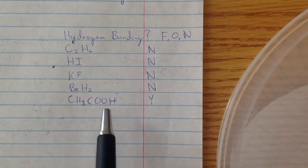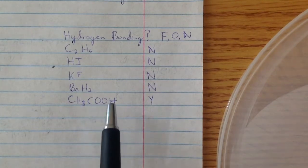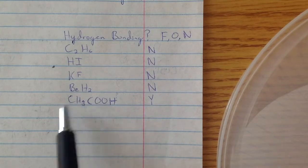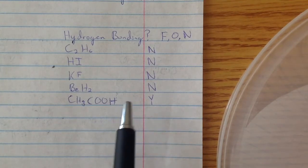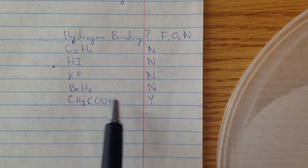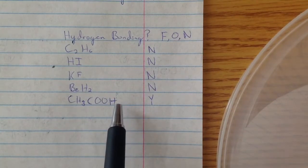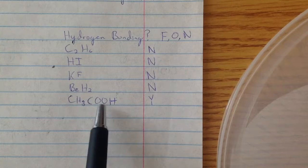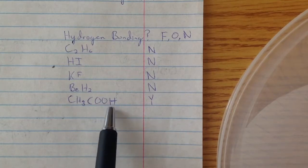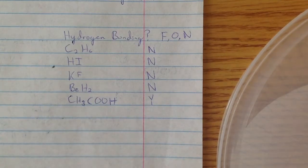Sometimes, even though there will be an O and H in the formula, the oxygen will actually not be combined with it. So, for that, you might need to know how to draw the Lewis structure, or they'll provide it. And then, if it's not physically connected with the hydrogen, then there's no hydrogen bond.